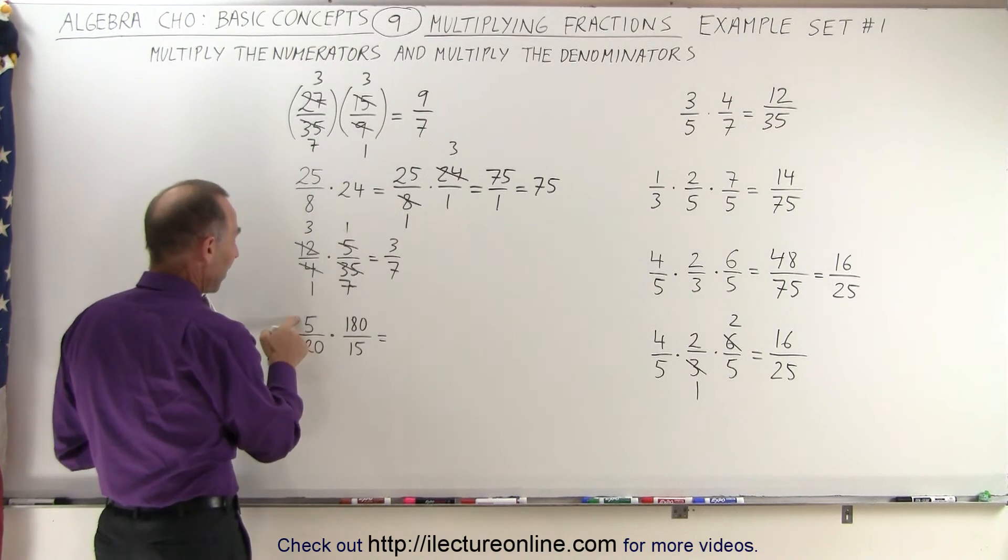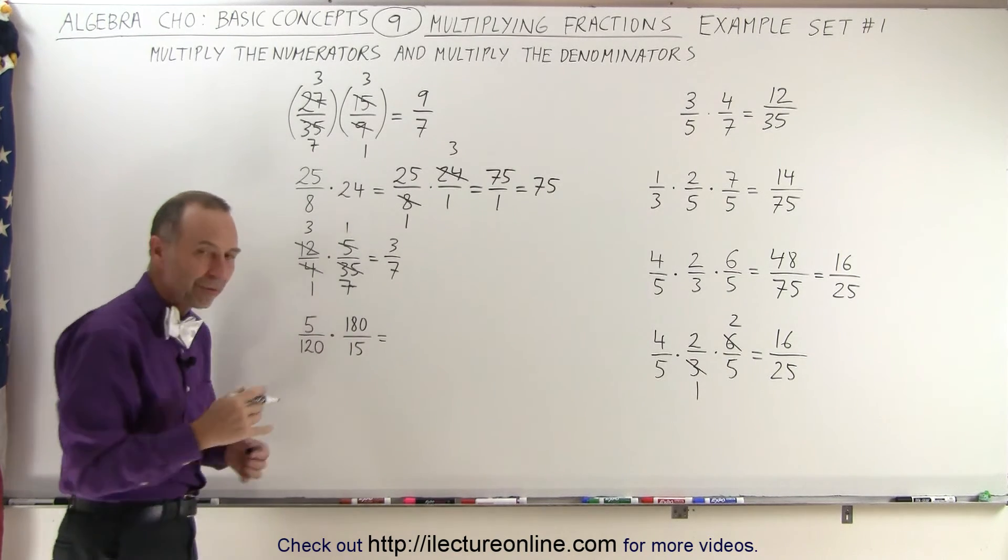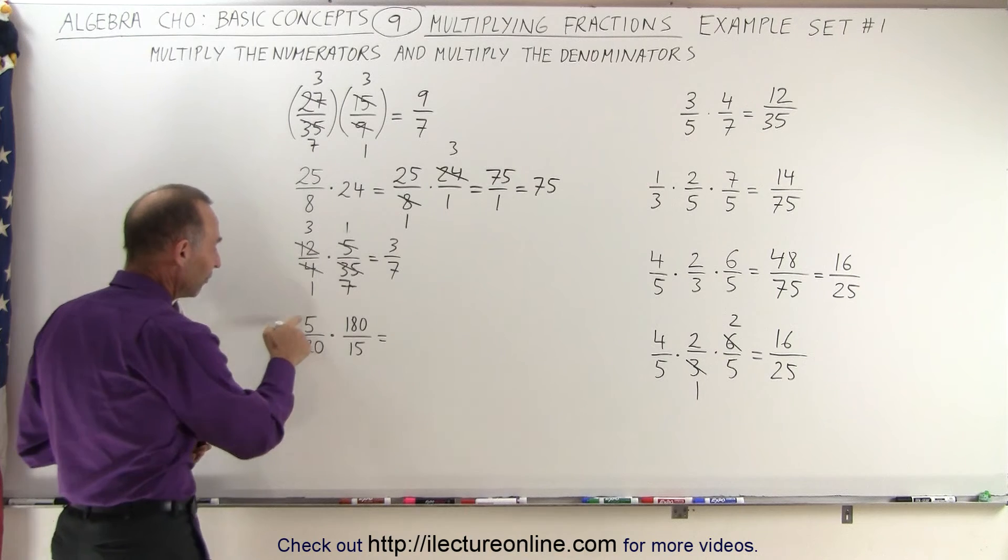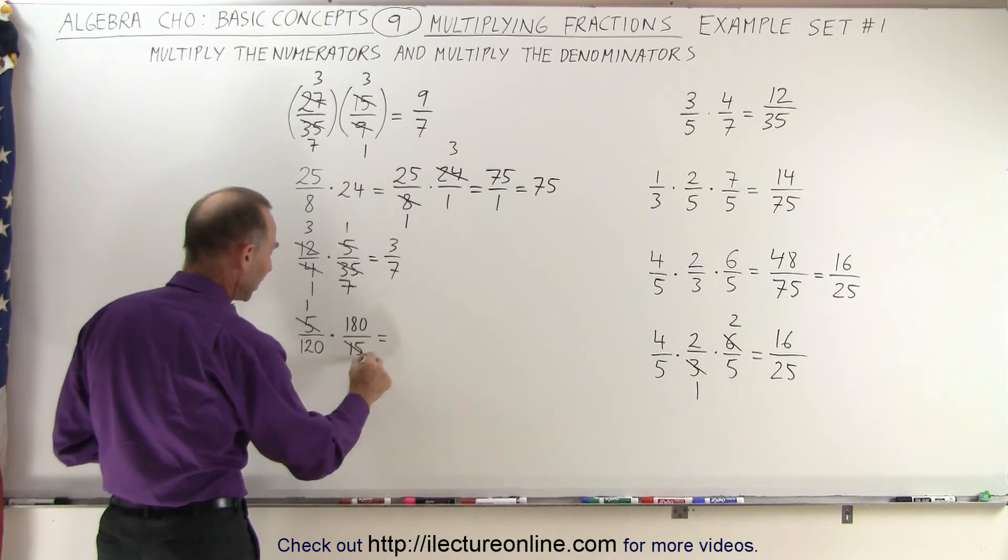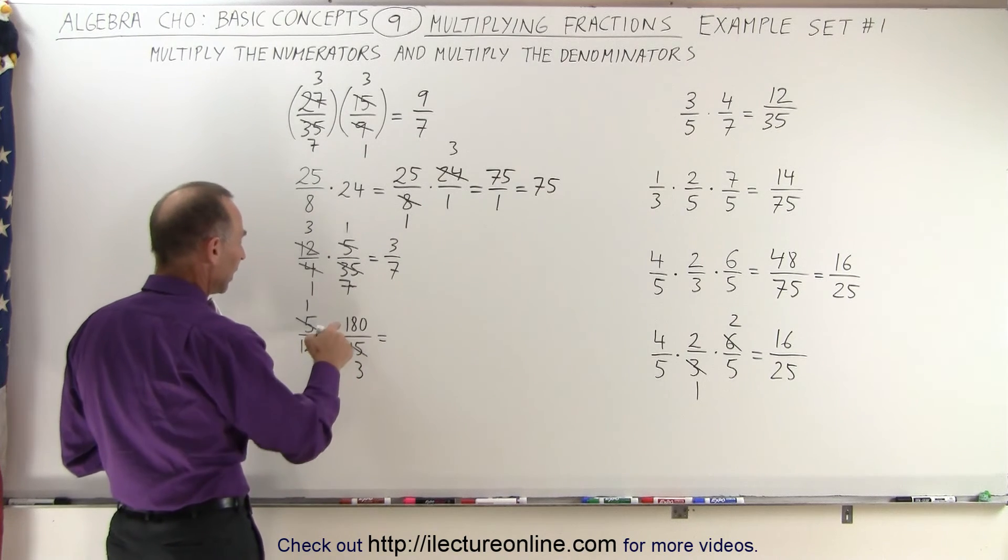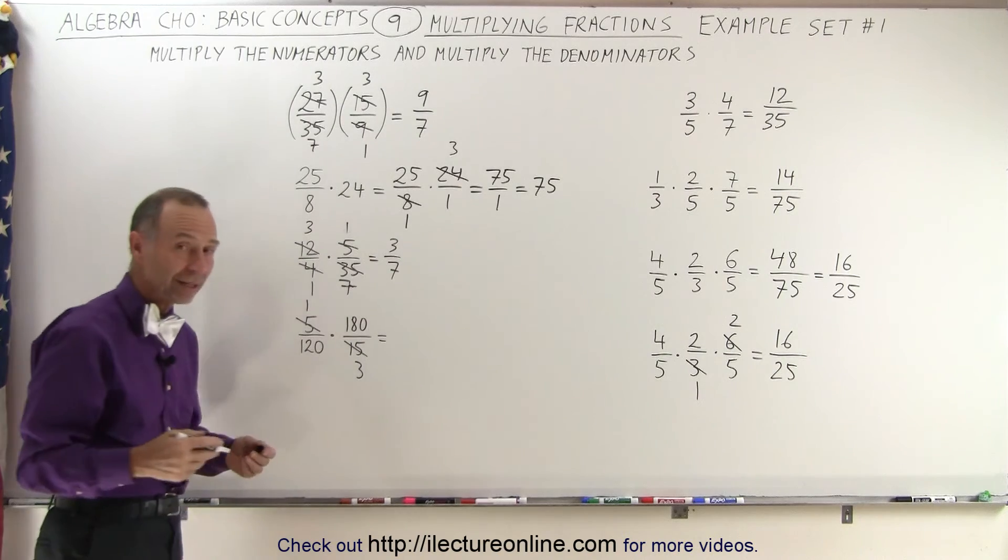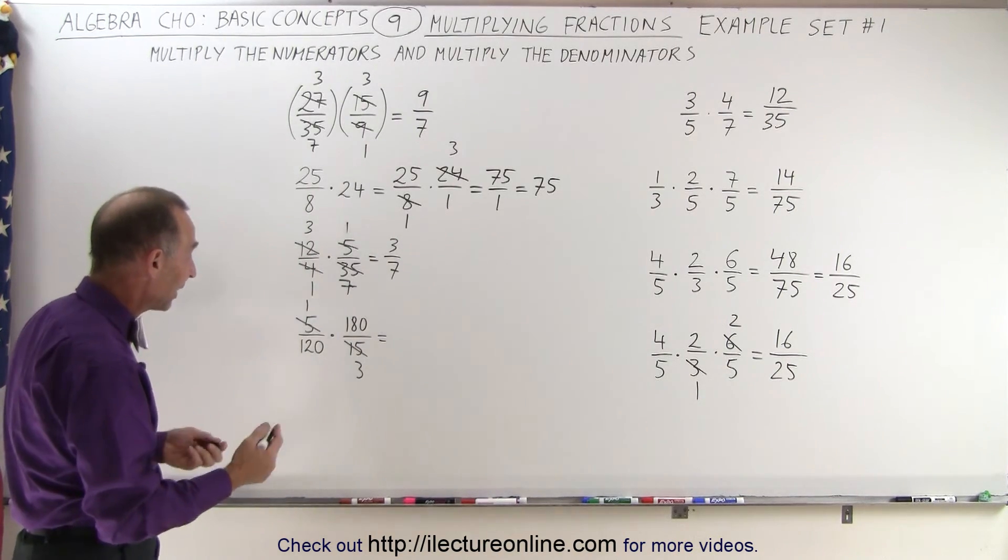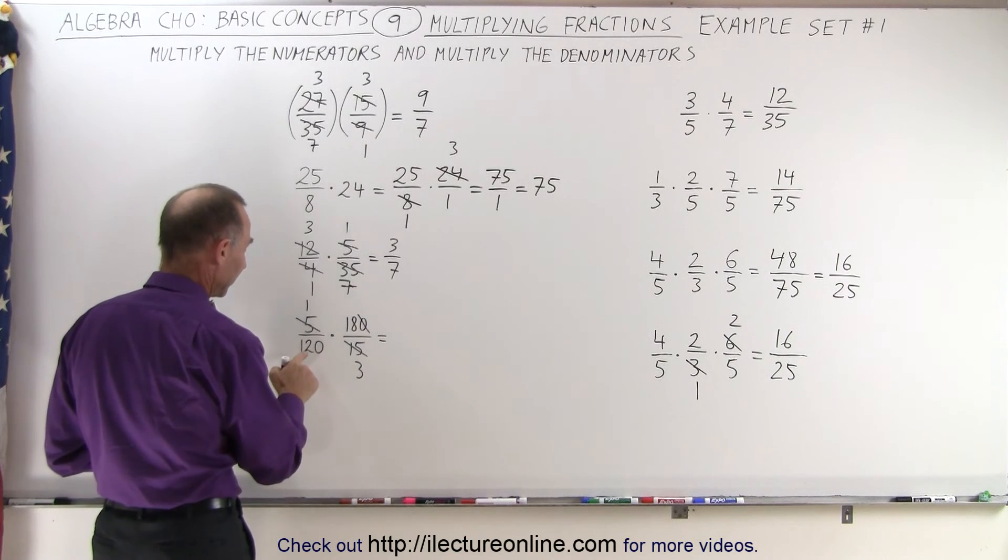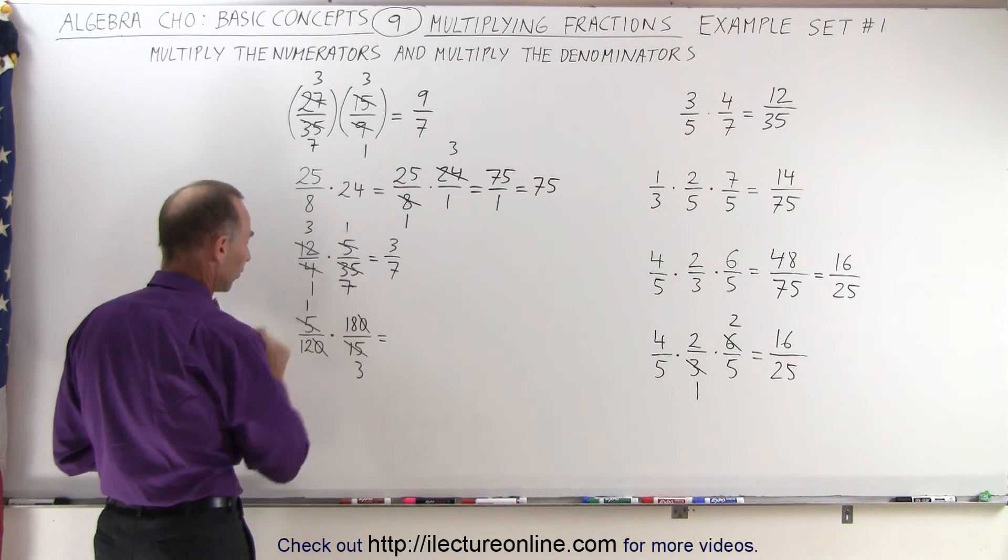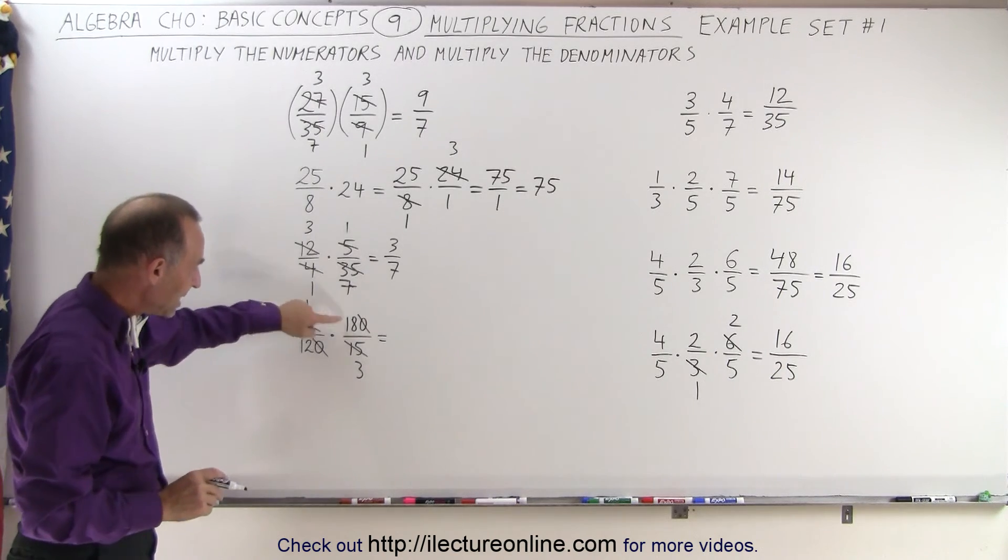Here notice we have a 5 and a 15, and 120 and 180. It looks like we can simplify this. Both 5 and 15 are divisible by 5. So 5 divided by 5 is 1, and 15 divided by 5 is 3. Here the 180 and 120 both end in 0, which means they can both be divided by 10. If I divide 180 by 10 the 0 disappears. If I divide 120 by 10 the 0 disappears. Of course we need to do that at the same time. Now we have 18 and 12.